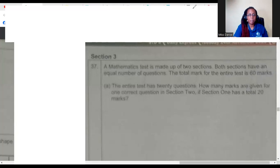Let's look at number 37. We're in section three. A mathematics test is made up of two sections. Both sections have an equal number of questions. The total mark for the entire test is 60 marks. The entire test has 20 questions. How many marks are given to one correct answer in section two if section one has a total of 20 marks? Let's see how we're going to tackle this. Let's think about the remainder and take out some information.